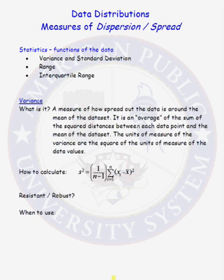In this lesson, we are going to talk about four different measures of dispersion or spread. Each of these measures is a statistic or a function of the data. The first two are closely related: the variance and the standard deviation, range, and the interquartile range.